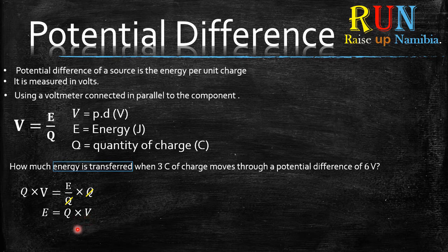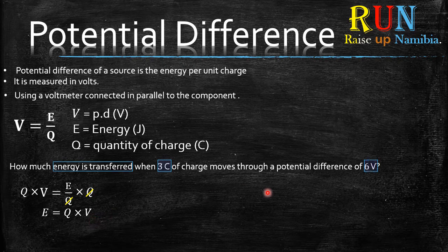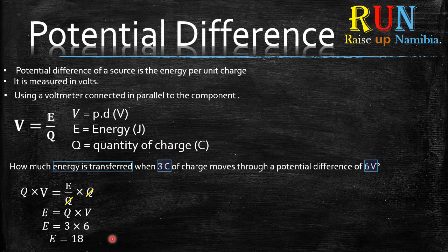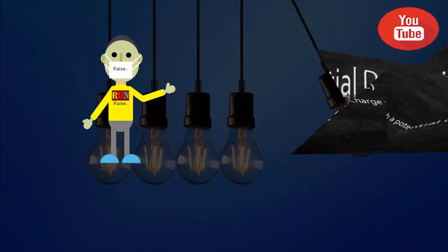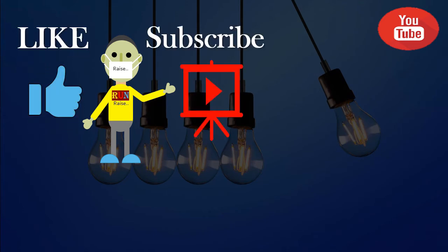Substituting into the formula: do you have Q, the quantity of charge? Yes, three coulombs. Do you have V, the potential difference? Yes, six volts. So three multiplied by six gives us 18 joules — because it's energy, the unit is always joules. That's your final answer.